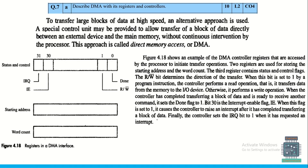To describe DMA with its registers and controller: the registers in the DMA interface include IRQ, IE, Done, and Read/Write bar. Add detailed explanation of each register and how DMA works. Since this is for 10 marks, write in points, underline important content, and aim for at least one page.